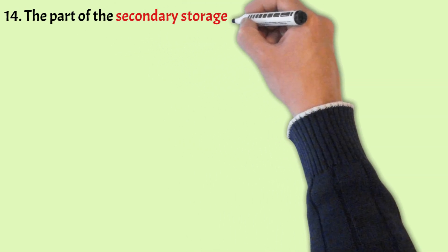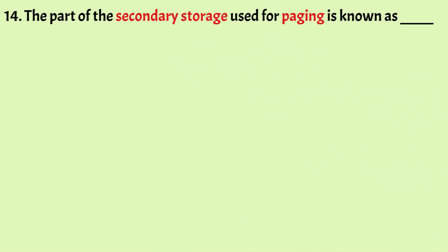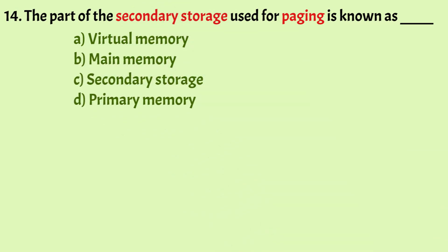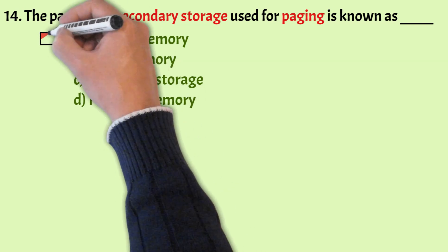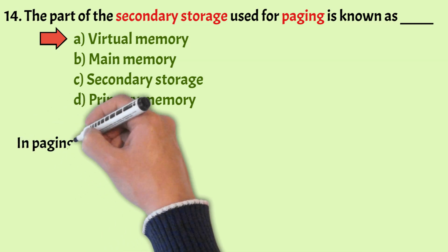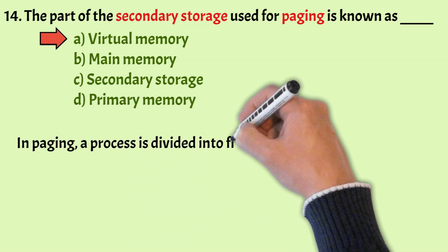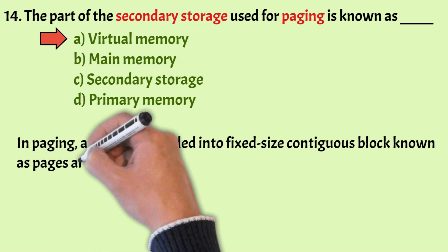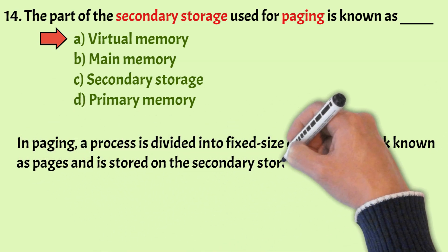The part of secondary storage used for paging is known as: virtual memory, main memory, secondary storage, or primary memory. The correct answer is Option A, virtual memory. In paging, a process is divided into fixed-size continuous blocks known as pages and stored on secondary storage.